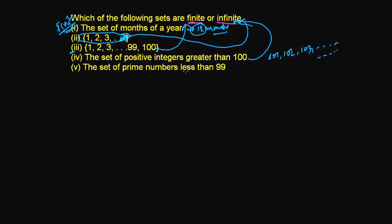The set of prime numbers less than 99—there's a fixed limit already. You can easily count them. The first one will be 2, then 3, then 5, 7, 11, then 13, then 17, and so on.